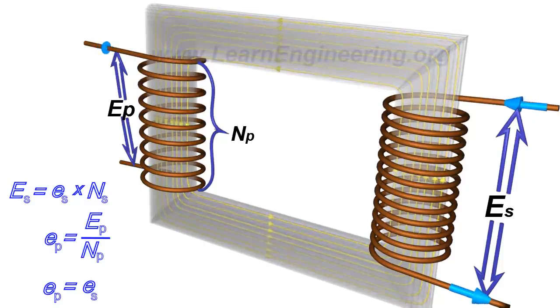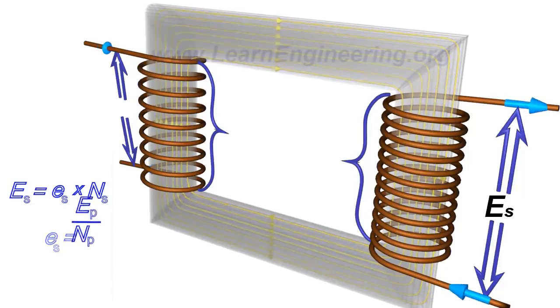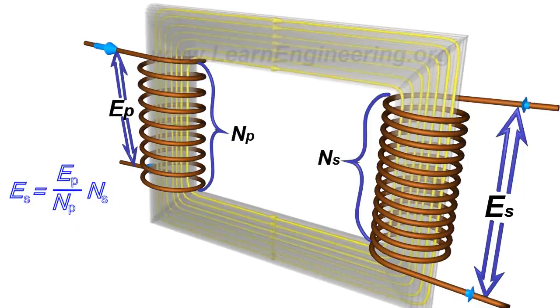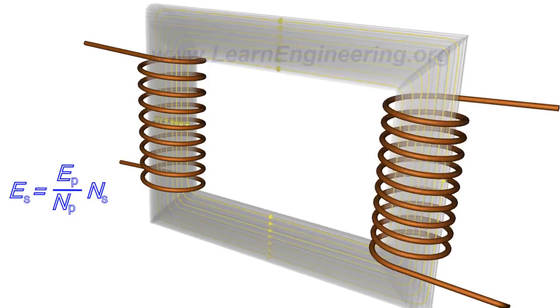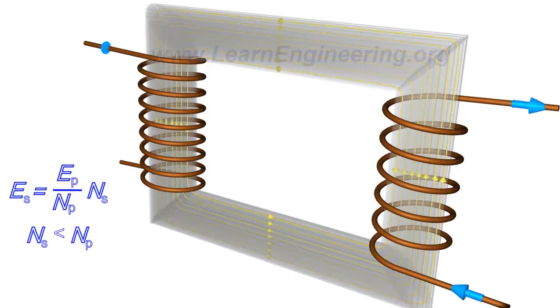As a result, the induced EMF at the secondary coil is expressed as follows. This simply means that with fewer turns in the secondary than in primary, one can lower the voltage.